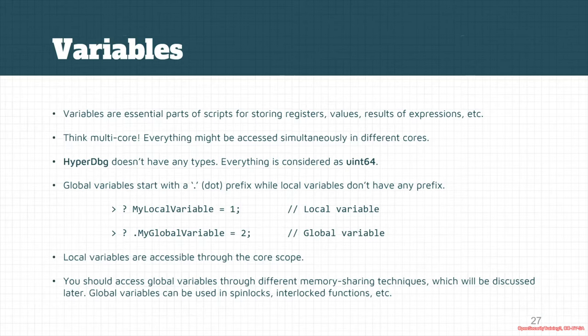We need local variables for each core. The context of local variables is based on each core. The important thing is that the current version of the script engine doesn't have any types.